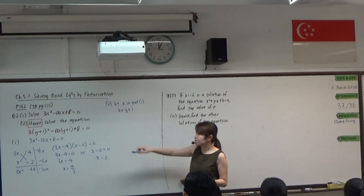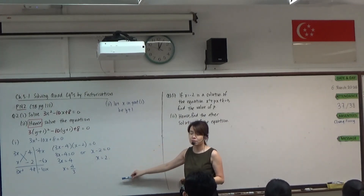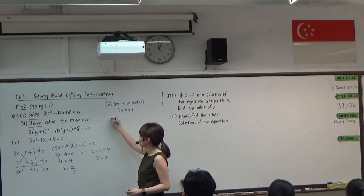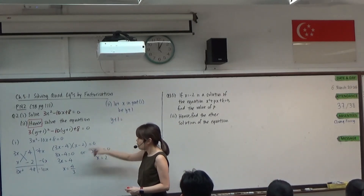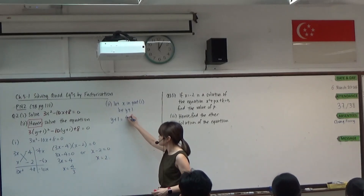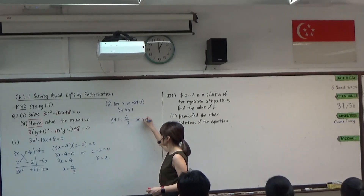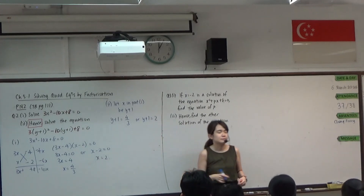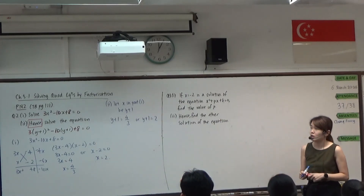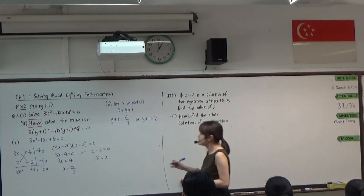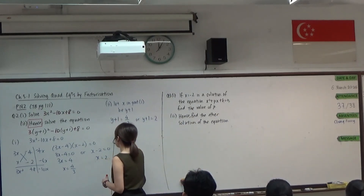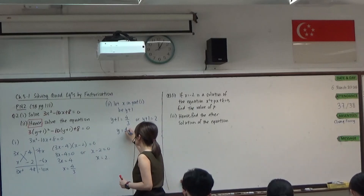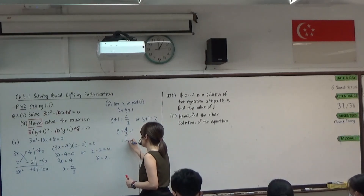So there is no need for us to go through the same set of steps again. We are just going to make use of the answer that we have. So y plus 1 equals 4 over 3, or otherwise y plus 1 equals 2. My objective is to find y, not y plus 1. So y will be equal to 4 over 3 minus 1, which is 1 third.